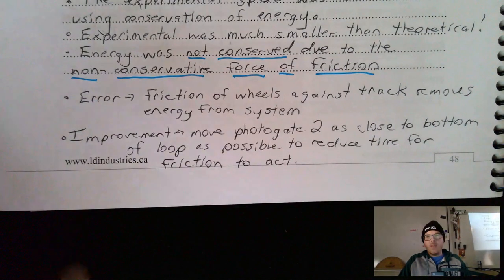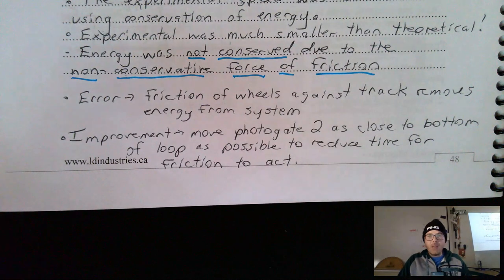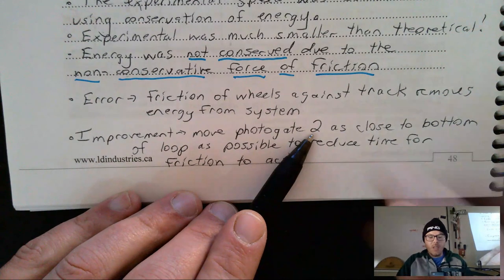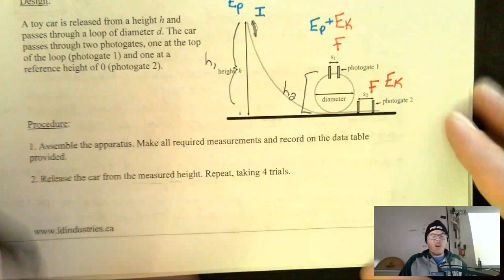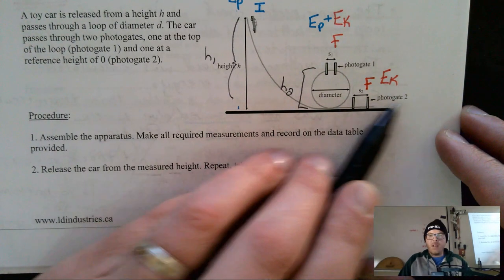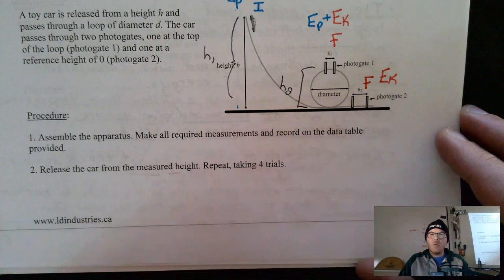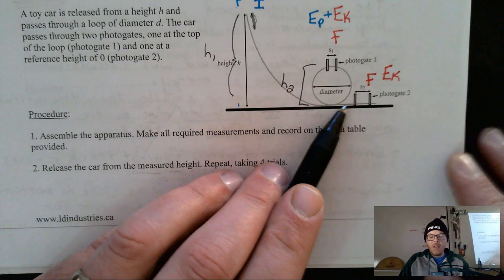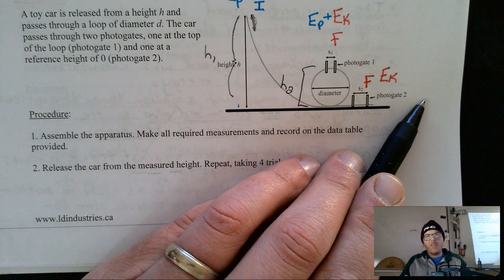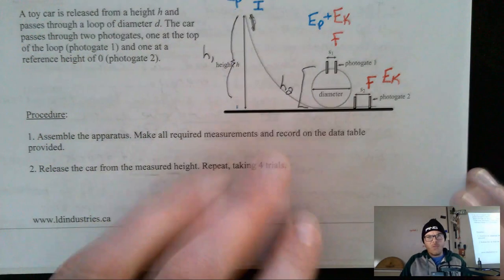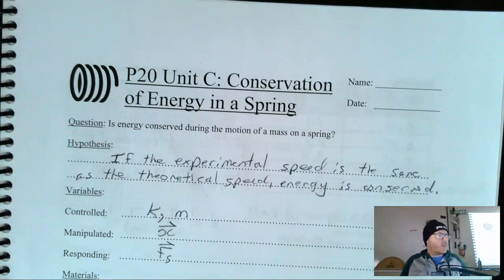What improvement can reduce friction? You can sometimes find Hot Wheels cars that lose less energy to friction. A very practical improvement is thinking about where to place photogate two. If it's close to the bottom of the loop, friction has less time to act and removes less energy. If photogate two is far from the bottom, friction acts longer, more kinetic energy is removed, and the experimental and theoretical speeds are even further apart. So this first lab showed a very non-isolated system due to friction.